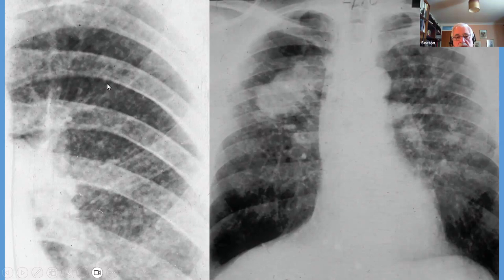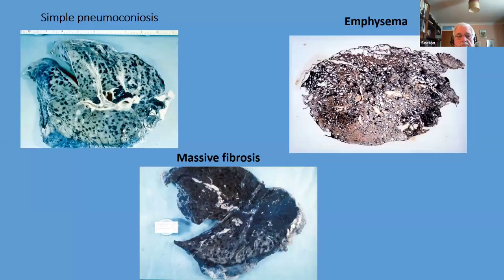Simple pneumoconiosis, though harmless in itself, was shown to progress to massive fibrosis in a proportion of people if the person kept being exposed to more dust. That, in a nutshell, is what pneumoconiosis is. Pathologically, if you slice the lung across, you can see the black lymph nodes at the hilum, and little black spots dotted through the lung — it looks just like a negative of the chest X-ray.